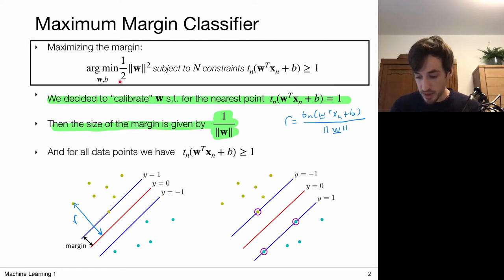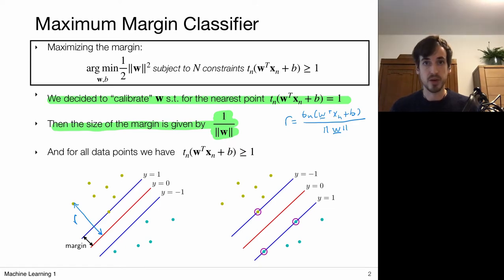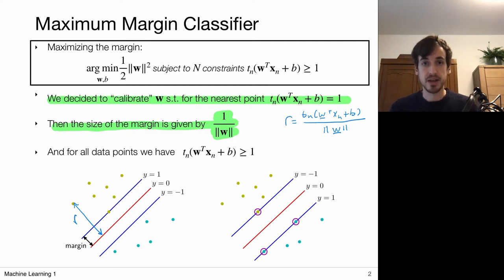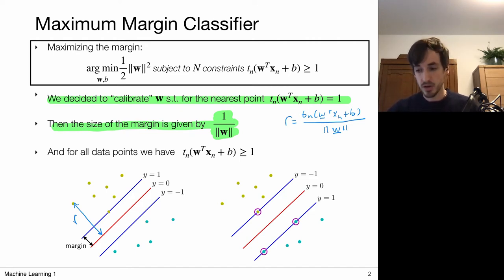We formulated the following constraint minimization problem: minimize one-half times the norm of w squared, under the constraint that this entity evaluates to one or bigger than one. Now we know more about constraint optimization — specifically about Lagrangians and dual Lagrangians. The objective of this video is to derive this dual Lagrangian and the dual optimization problem, and then show that we can obtain solutions based on a kernel viewpoint.